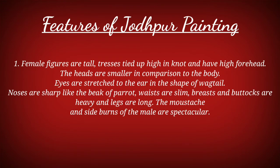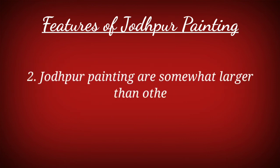Now we will discuss the features of Jodhpur paintings. First, female figures are tall, dresses tied up high in a knot, and have a high forehead. The heads are smaller in comparison to the body. Eyes are stretched to the ear in a rectangular shape, noses are sharp like the beak of a parrot, waists are slim, breasts and buttocks are heavy, and legs are long. The mustache and sideburns of the male figures are spectacular.